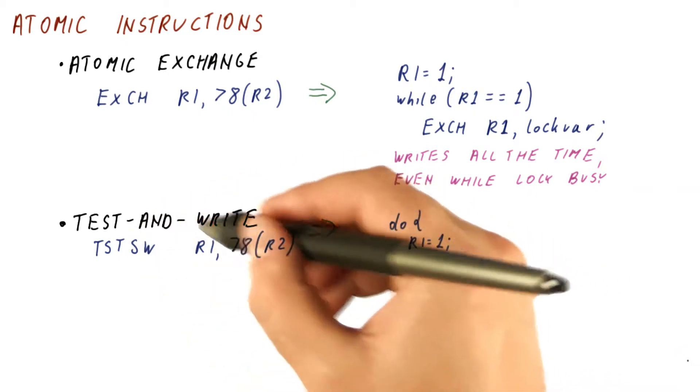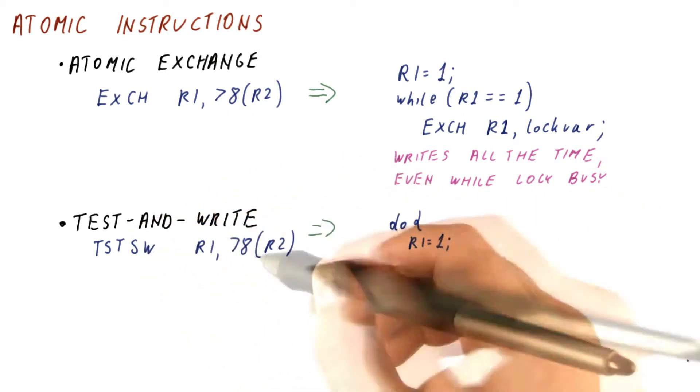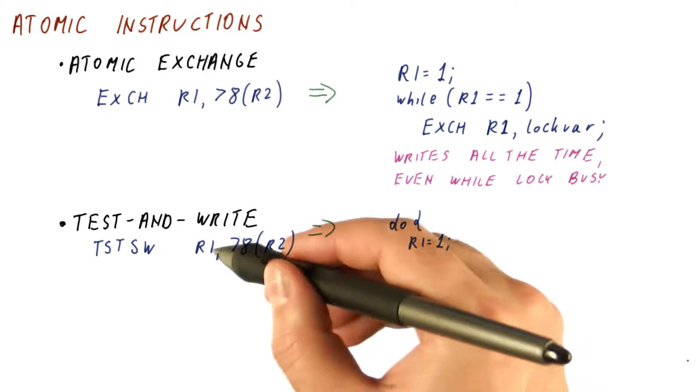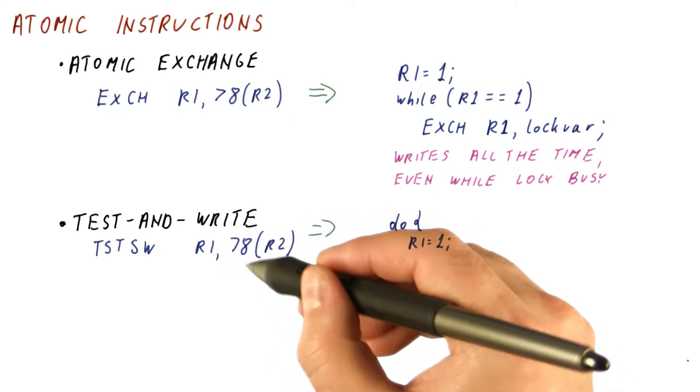Our test and write class of instructions is trying to avoid that by testing the memory location and only writing to it if they find a zero there.